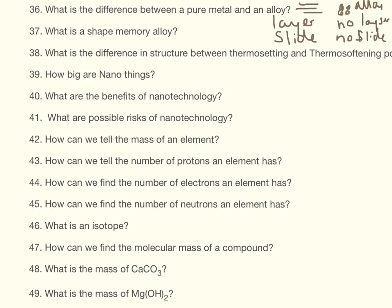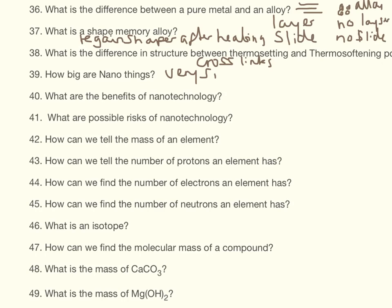A shape memory polymer is one that will regain its shape, generally after heating. What is the different structure between thermosetting and thermoplastic polymers? That is the cross-links. How big are nano-things? They are very small. Benefits of nanotechnology: sun cream and improved medicines. The possible risk is that we don't know the long-term effects.